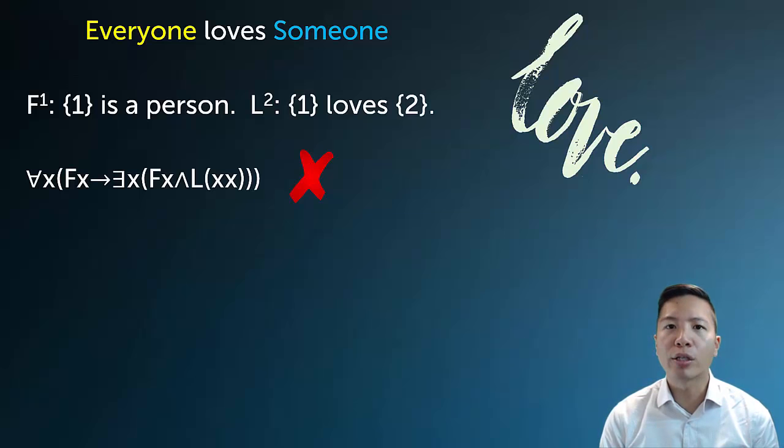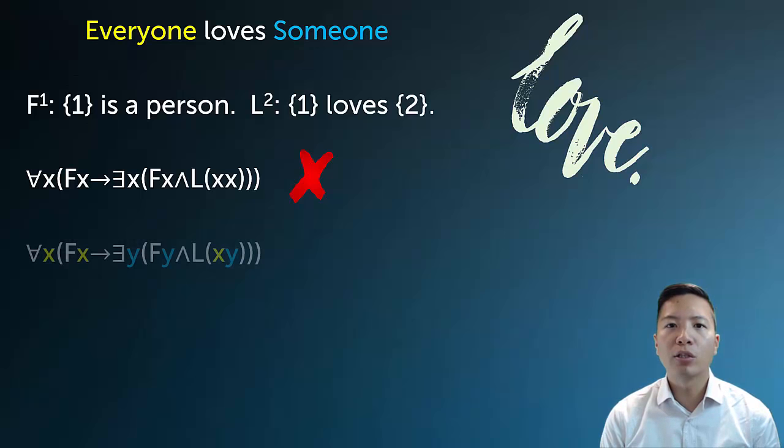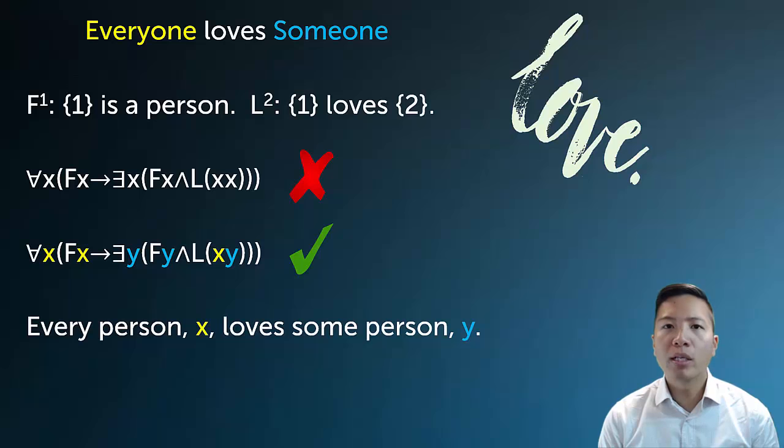Because we see here, when the quantifiers are nested, that is to say, one quantifier falls under the scope of the other, we do have to be quite careful about what letters we use. Because here, if I use x for everything, then in the end I have LXX, and it's unclear if it's the everyone who loves someone or the someone who's loving everyone. So the proper way to do this, and the way I'm always going to suggest moving forward, is that whenever you have nested quantifiers, it's always safest and best to introduce your second quantifier and your third quantifier with a new letter. That way, there would never be any risk of confusion.